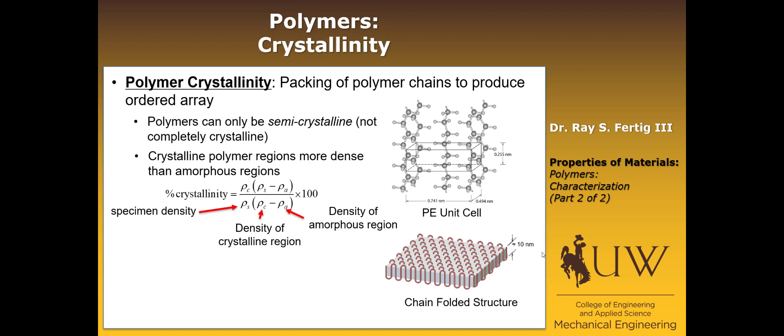A couple things that you might note or might be able to surmise intuitively is that crystallinity is going to occur typically in chemically simple polymers. And you can imagine that the more complex and convoluted the polymer is, the harder it is to form nice repeatable patterns. It's going to be much easier if the molecule is simple, like polyethylene.